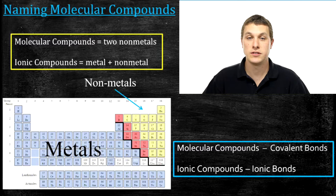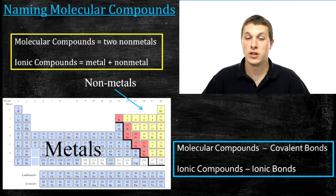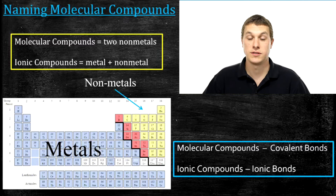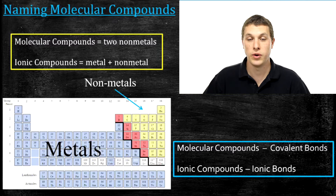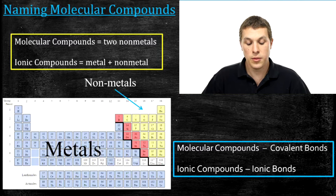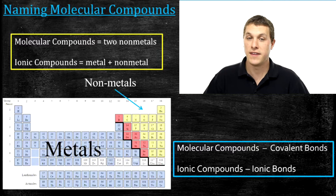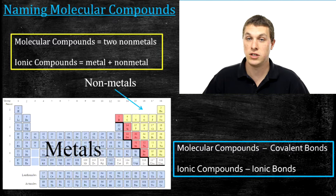The main difference between these two types of compounds is the chemical bonds that hold the elements together. In molecular compounds, covalent bonds hold them together — that's a sharing of electrons between the two elements. In ionic compounds, an ionic bond holds them together, which is due to a transferred electron creating a difference in charge. So the basic takeaway is: if you see two nonmetals in a compound, that's a molecular compound.